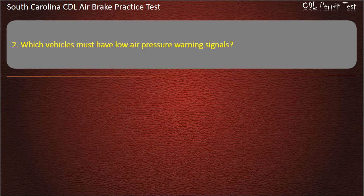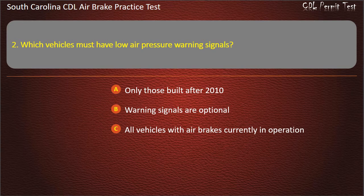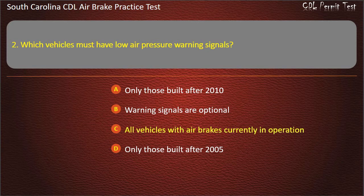Question 2: Which vehicles must have low air pressure warning signals? Only those built after 2010, warning signals are optional, all vehicles with air brakes currently in operation, or only those built after 2005. Answer: All vehicles with air brakes currently in operation.